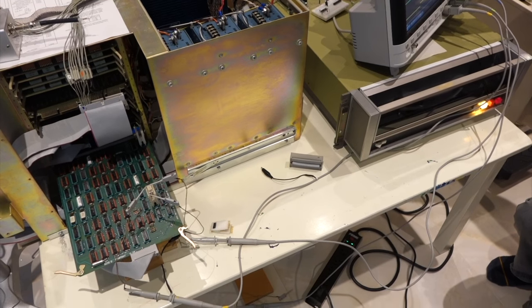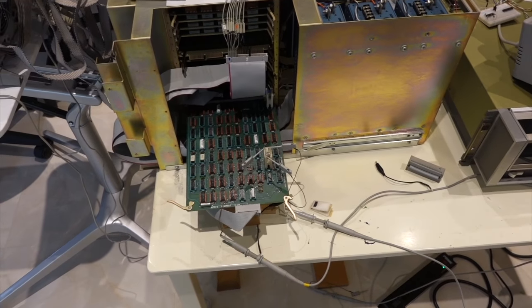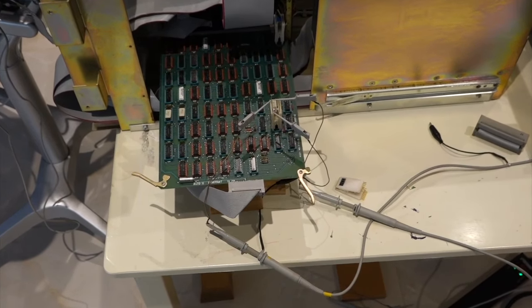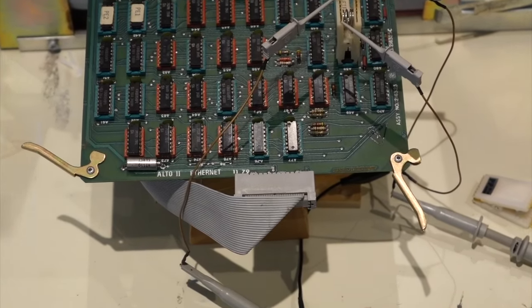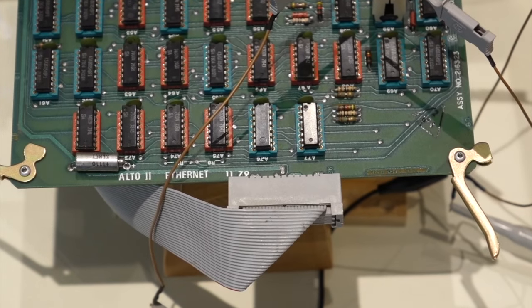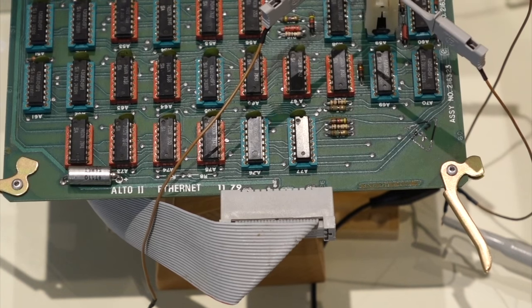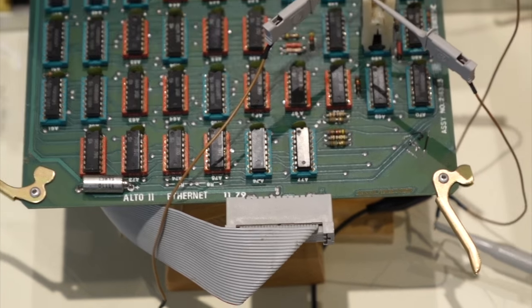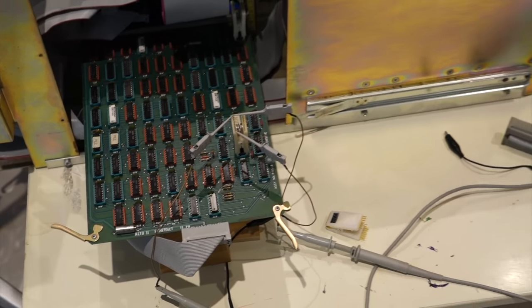Hello, welcome to session number 12. Today we start to focus on the last bit we haven't checked on the Alto, which is the Ethernet card - actually a pre-standard Ethernet. This is a three megabit per second Ethernet. That's where it all started.